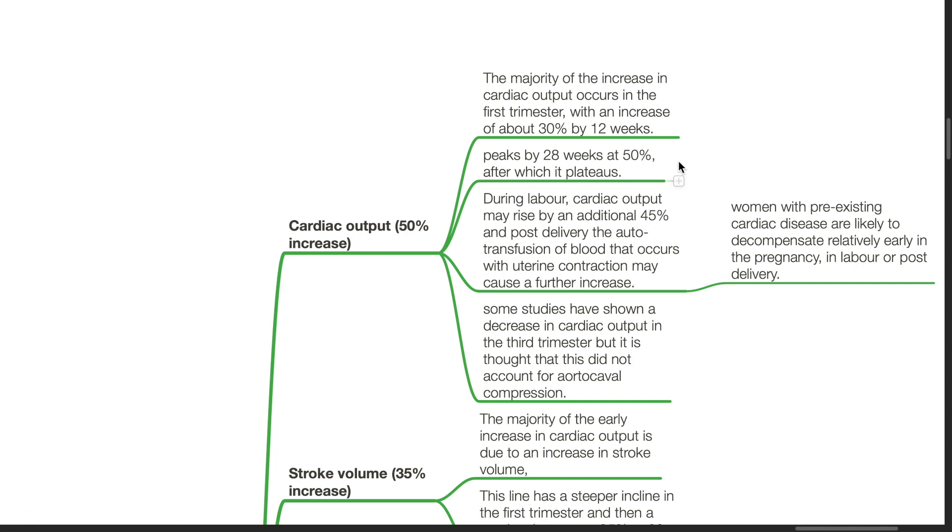During labor, cardiac output may rise by an additional 45%, and post-delivery, the autotransfusion of blood that occurs with uterine contraction may cause a further increase. Women with pre-existing cardiac disease are likely to decompensate relatively early in the pregnancy, in labor, or post-delivery. Some studies have shown a decrease in cardiac output in the third trimester, but it is thought that this did not account for aortocaval compression.